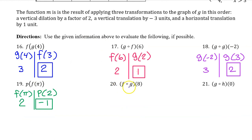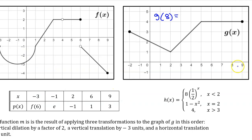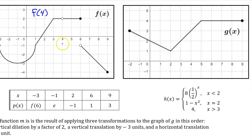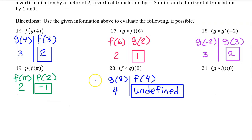Number 20. For the open circle notation we work from right to left. So we begin with G at 8. Here's the input value of 8, so G at 8 is 4. Sliding to the left we must evaluate function F at 4. Here is the input value of 4, but all we see at 4 is an open circle — there's nothing else. So F at 4 is undefined. Therefore the composite function is also undefined.